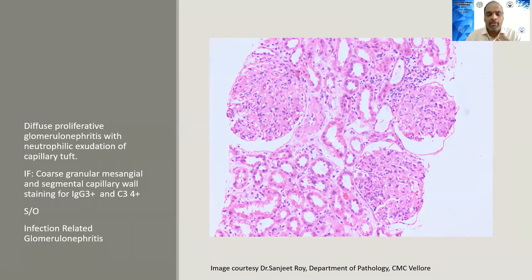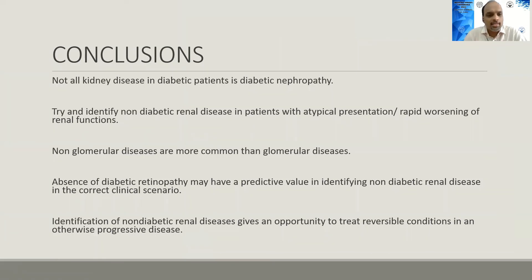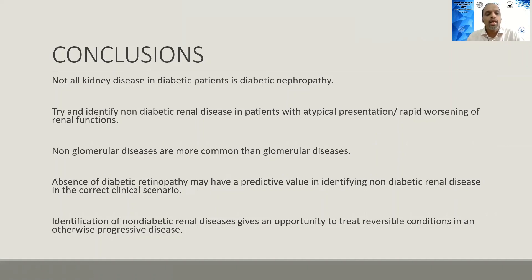In conclusion: not all kidney disease in diabetics is diabetic nephropathy. We should identify non-diabetic renal disease in diabetics presenting with atypical features or rapid worsening of renal function. Non-glomerular diseases are much more common than glomerular diseases in this population. Absence of diabetic retinopathy has predictive value only in the correct clinical scenario. Most importantly, identifying non-diabetic renal disease matters because these diseases can sometimes be reversed in an otherwise progressive disease.